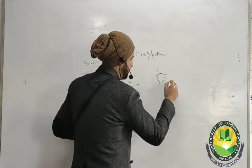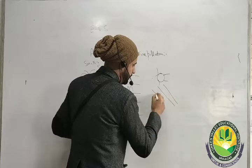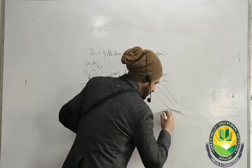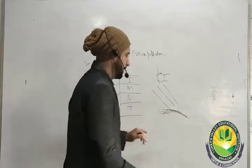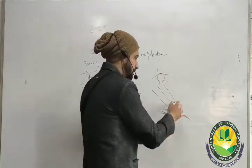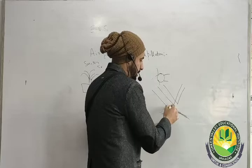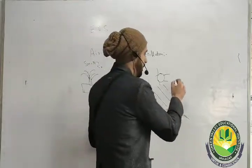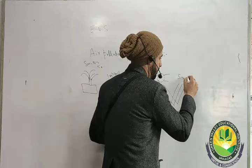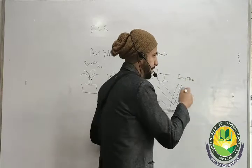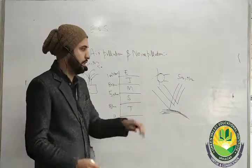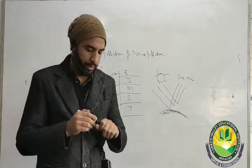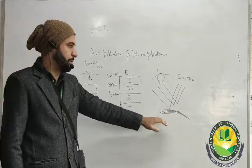The sun emits infrared rays which come from the sun to Earth. When they reach Earth, they are radiated back. But we have SO2 and NO2 and other greenhouse gases that trap these rays, causing global warming. This is the greenhouse effect mechanism leading to global warming.